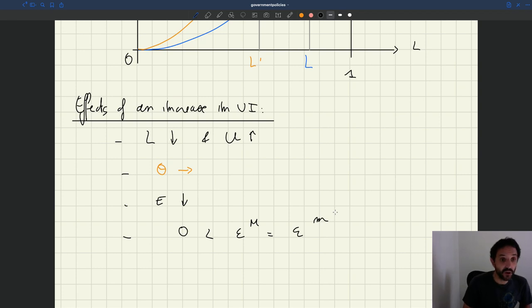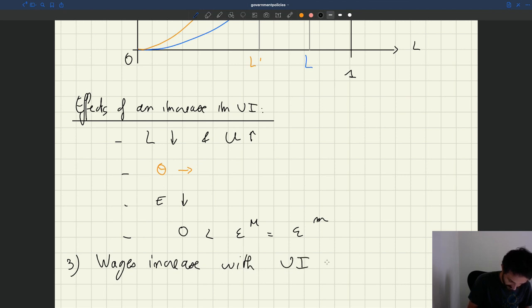So now let's look at a third and last case, where we're going to assume that wages increase with UI instead of not responding to UI, which is what you would get, for instance, through bargaining. Here we're going to look at a really standard matching model where you have this bargaining going on and a linear production function.